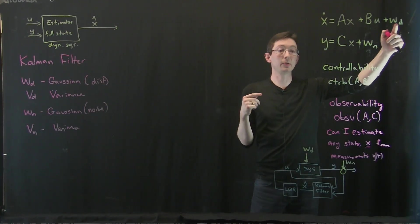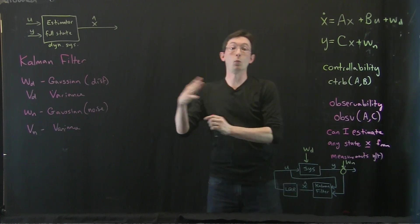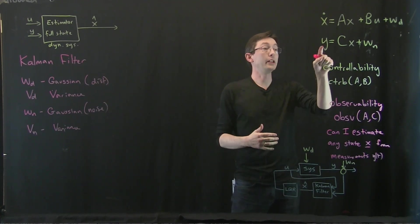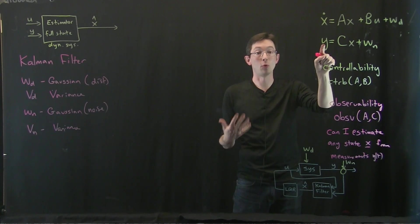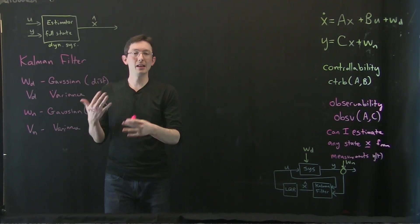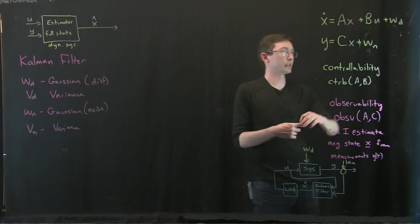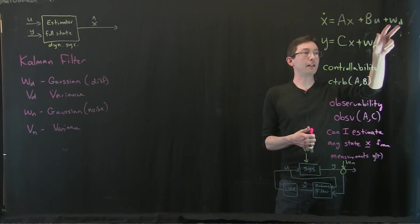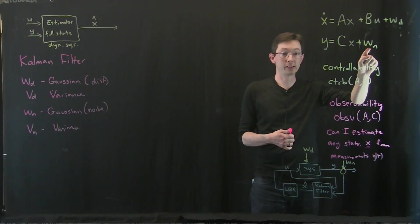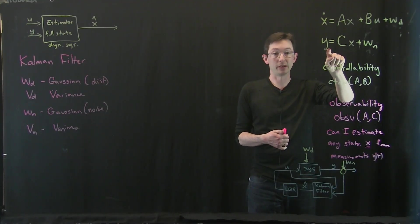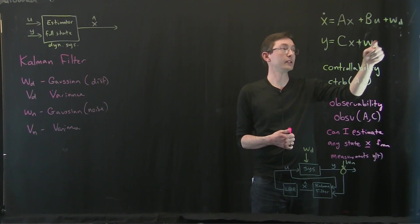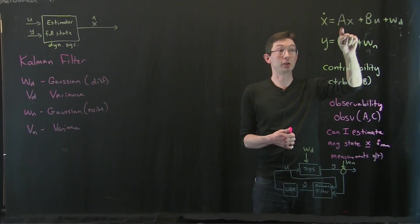It has to rely on its model more. But if it has really big disturbances, if it could get kicked way off where it thinks it is, then it should trust its measurements Y more. Based on the ratio of these variance matrices, if I have bigger disturbances than noise, then I should trust my measurements. And if I have bigger noise than disturbances, I should trust my model.